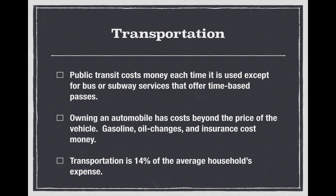Transportation. Public transit costs money each time it's used, except some bus or subway services may offer a time-based pass. If you live in a large city, you can get a metro transit pass for a week or a month and pay just one price. Owning an automobile has costs beyond the price of the vehicle — gasoline, oil changes, and insurance all cost money. If you use a loan to buy it, you've got the principal and interest to pay off, plus all the maintenance, upkeep, and fuel. Transportation is 14% of the average household's expenses.